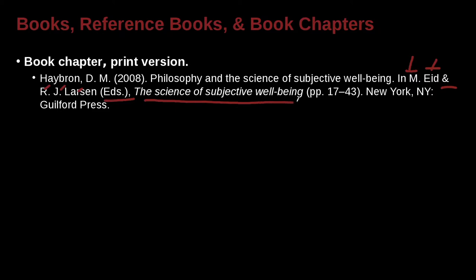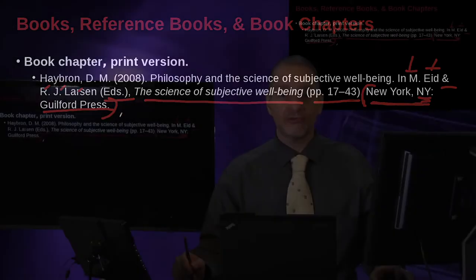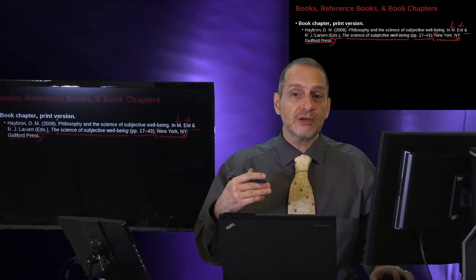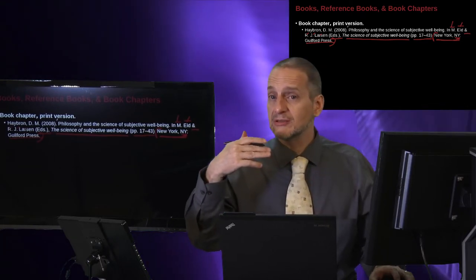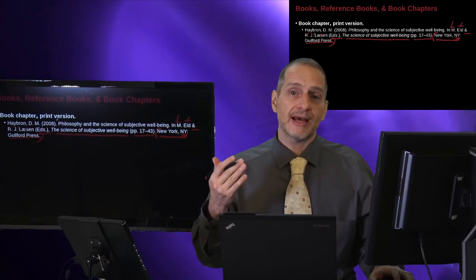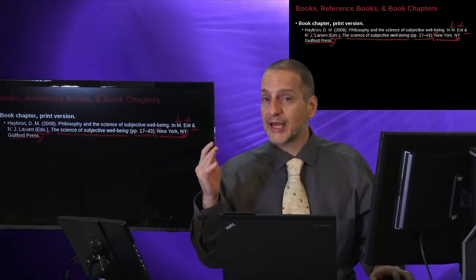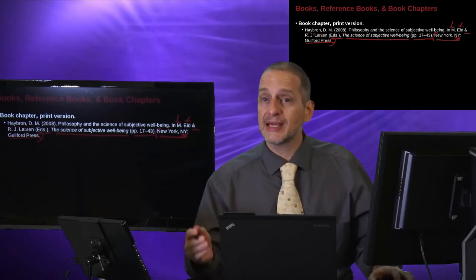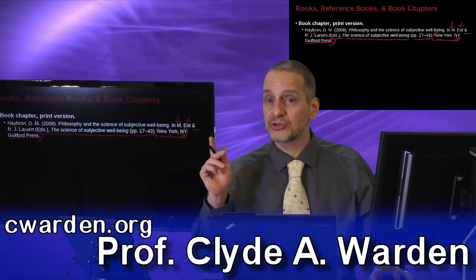Then we have the name of the overall book, then the pages of the chapter, then a period, then the location and city. If it's in the United States, you include the state — for example, New York, New York — comma, then a colon with no space before and one space after, then the publisher, Guilford Press. This publisher address information — it could be in the UK, Hong Kong, or China, so every country is different. The United States has many states with different abbreviations. Check inside the front one or two pages of the book to find what you need.